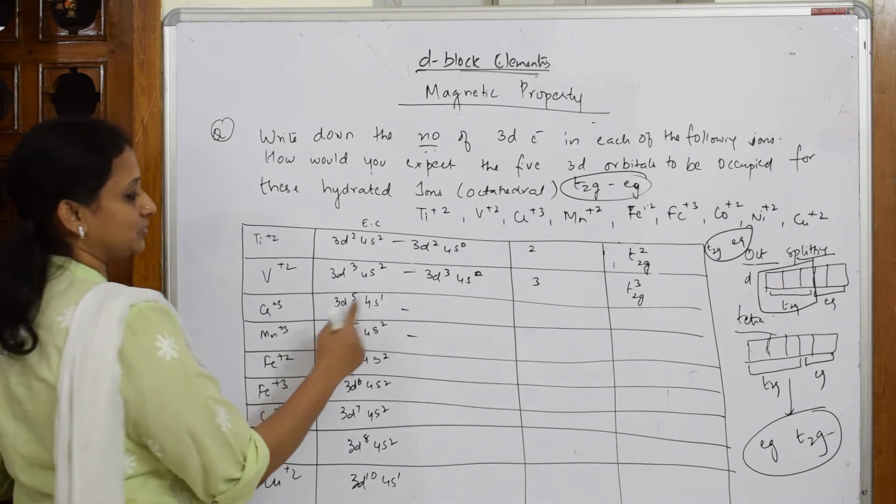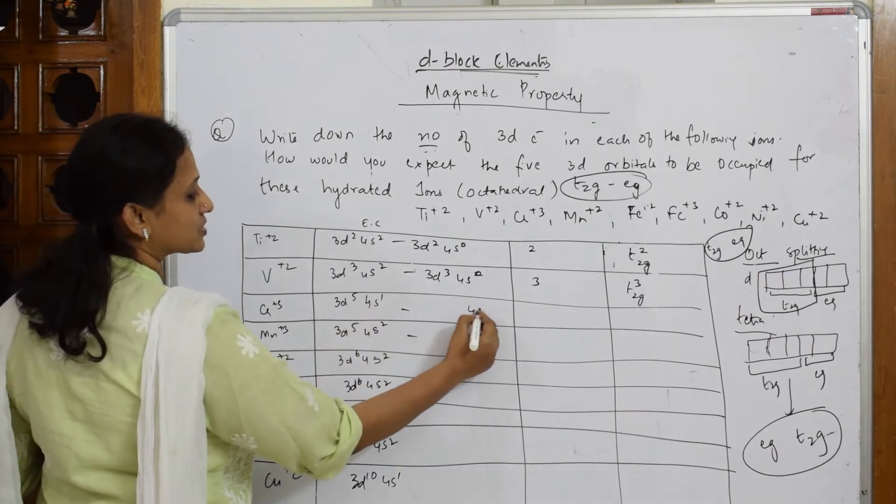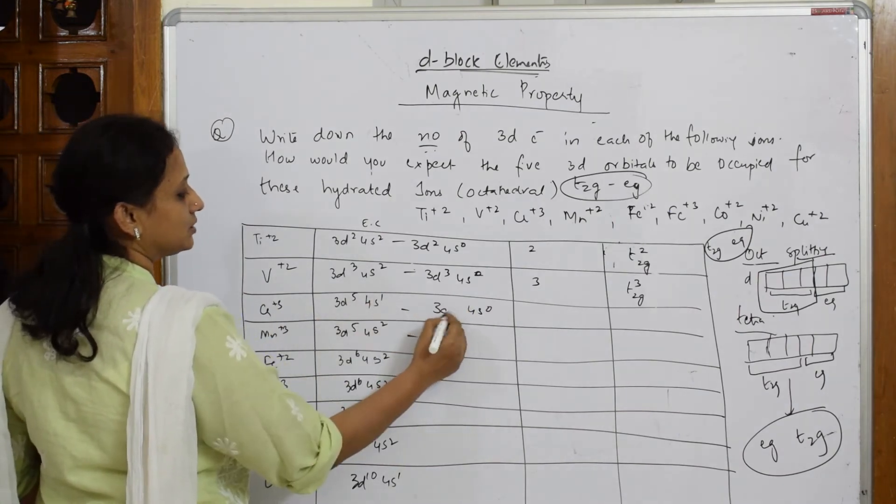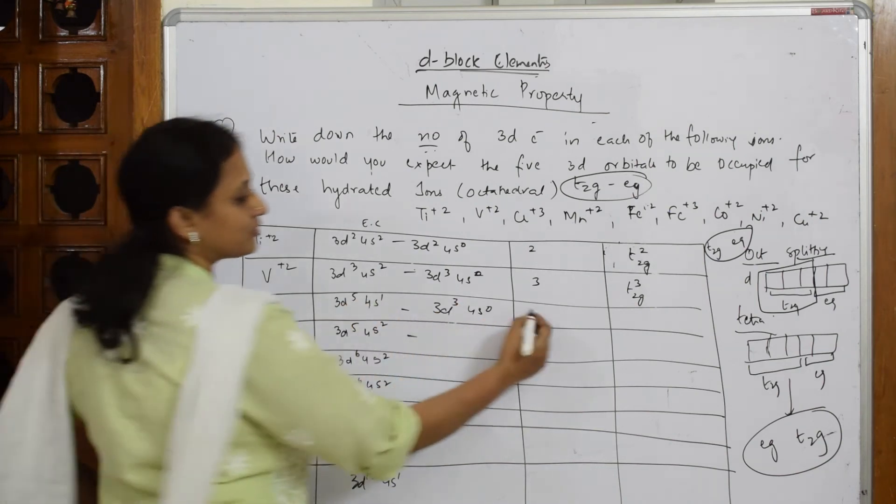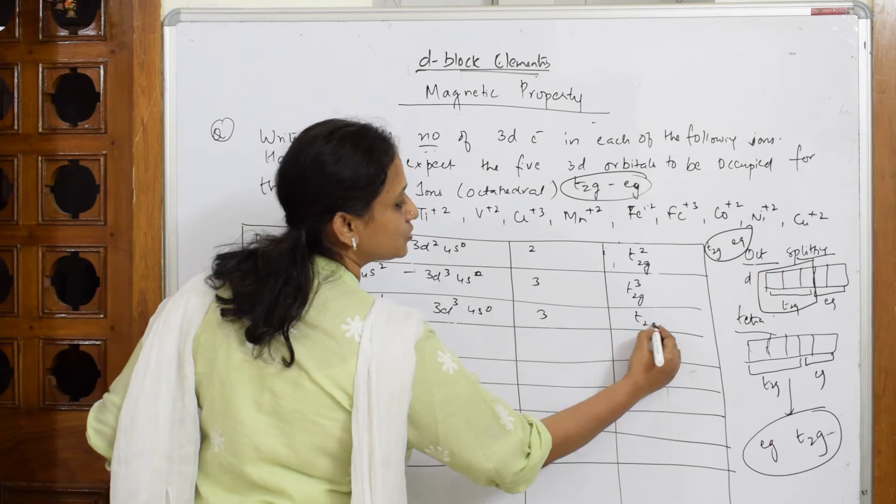Now, here chromium 3. So remove, this becomes 4S⁰. This becomes 1, 3 will be left. Number of unpaired electrons 3. So T2G³.